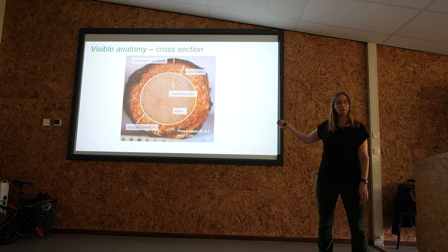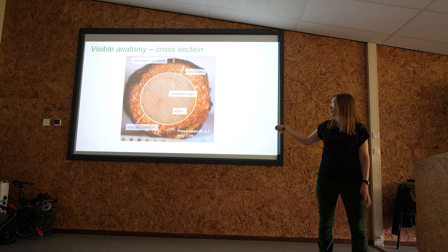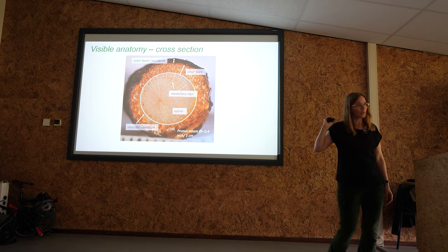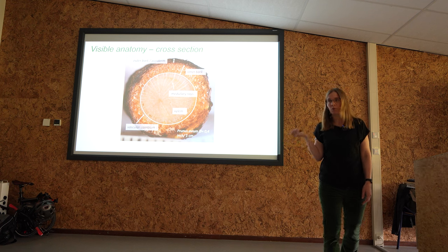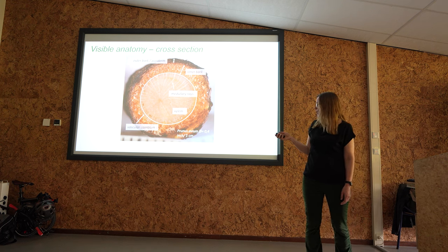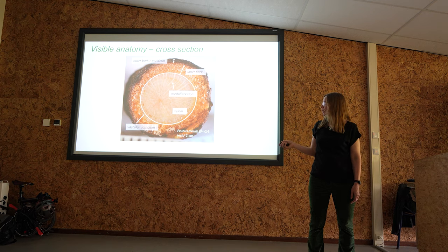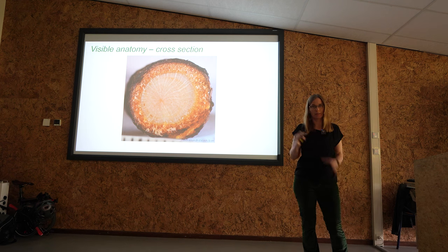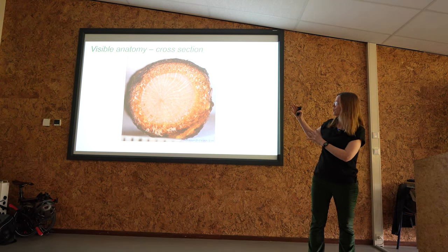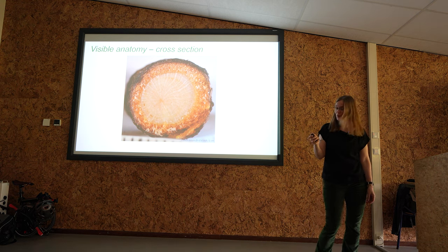In cross section we divide the root into outer bark or periderm, inner bark, xylem, and medullary rays that go from the center outward. Normally roots do not have a pith — some species may, but normally they do not, unlike the stem. The vascular cambium is just a thin circle — you can't see it directly, but you can see the difference between the xylem and the inner bark.